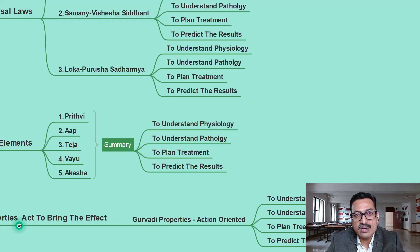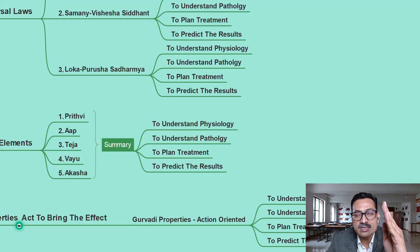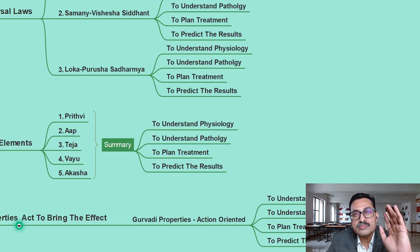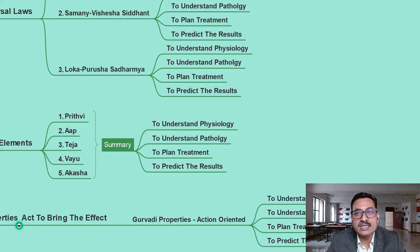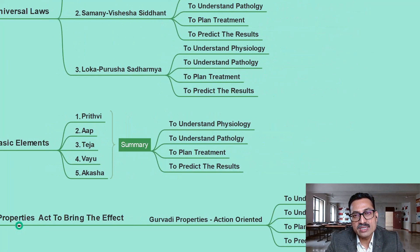Pitta corresponds to Agni outside — Agni burns and transforms everything, and the same is done by Pitta in the body; Pitta is the reflection of Agni, being the combination of Agni Mahabhauta and Vayu Mahabhauta. Vata is formed by Vayu and Akasha, and Kapha is formed by Prithvi and Ap. This is the Panchabhautika concept, which I will discuss in more detail in the next module on the five basic elements of Ayurveda.